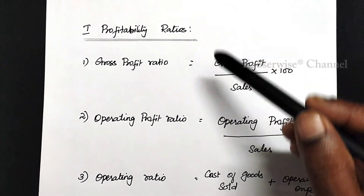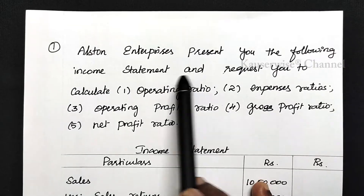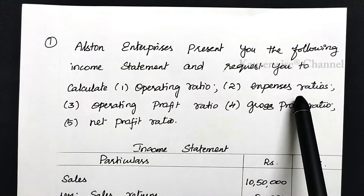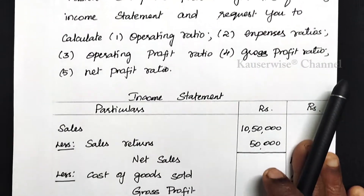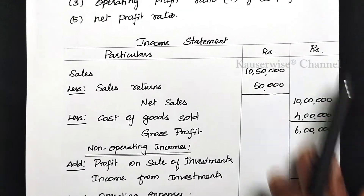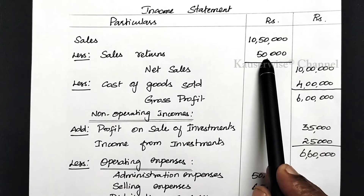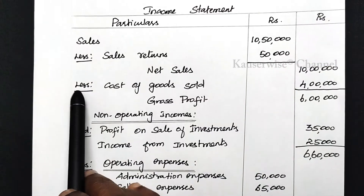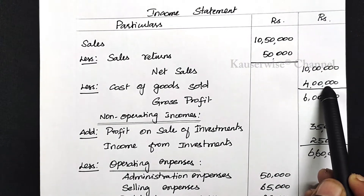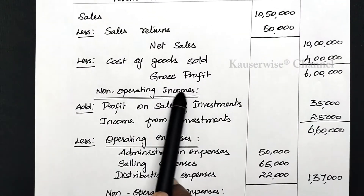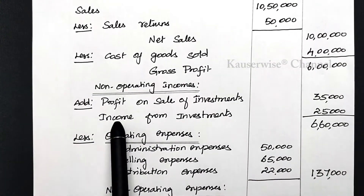Now let us see one numerical problem based on these five ratios. Alston Enterprises presents the following income statement and requests you to calculate operating ratio, expenses ratios, operating profit ratio, gross profit ratio, and net profit ratio. In the income statement, sales are 10 lakhs 50,000 minus sales returns of 50,000, giving net sales of 10 lakhs. Less cost of goods sold 4 lakhs; the balance of 6 lakhs is gross profit. There is also non-operating income: profit on sale of investment and income from investment.